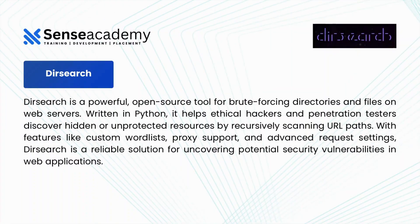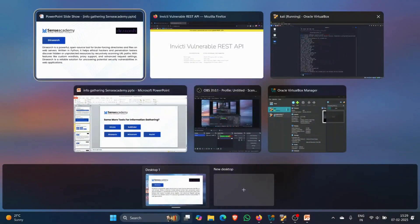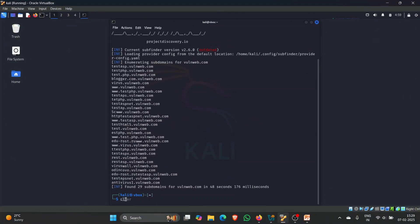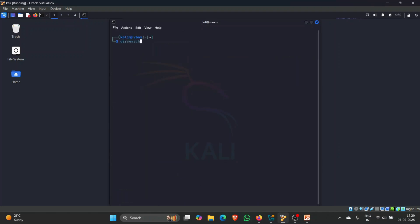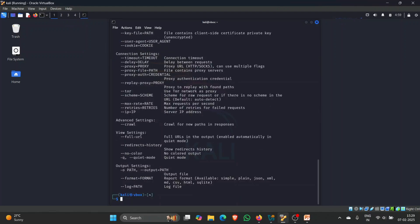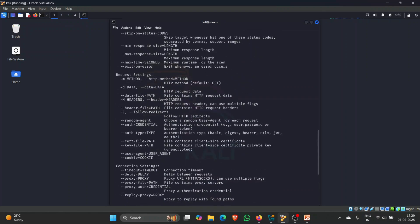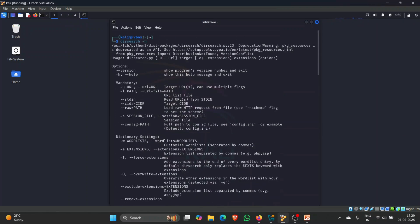The third tool is Dirsearch. Dirsearch is a powerful open source tool for brute-forcing directories and files on web servers. It is written in Python and helps ethical hackers and penetration testers discover hidden or unprotected resources by recursively scanning URL paths. Dirsearch will try to find directories that should not be publicly available — such as username/password directories or admin environment directories. Let me type 'dirsearch -h' to open the help menu. There are many flags available for enumeration tasks.